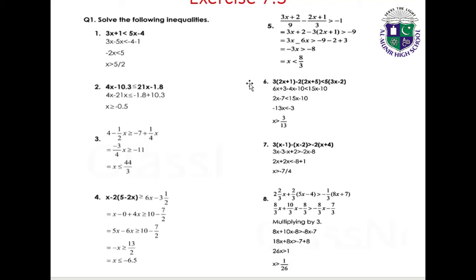Question 6: 3(2x plus 1) minus 2(2x plus 5) less than 5(3x minus 2). Expanding: 6x plus 3 minus 4x minus 10 less than 15x minus 10, giving 2x minus 7 less than 15x minus 10, so minus 13x less than minus 3, therefore x greater than 3/13. Solution: x > 3/13.